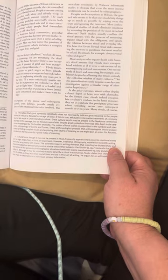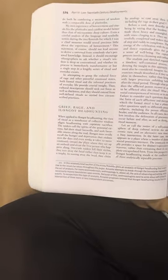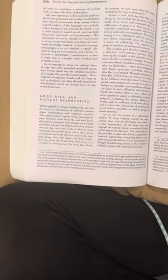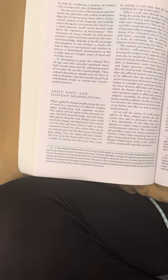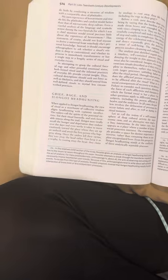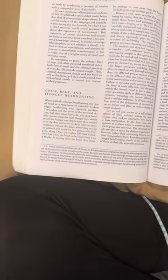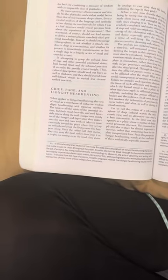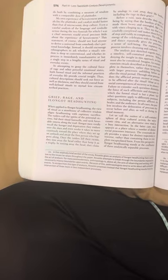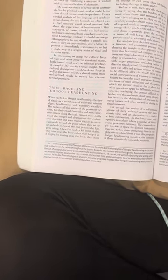Most analysts who equate death with funerary ritual assume that rituals store encapsulated wisdom as if it were a microcosm of its encompassing cultural macrocosm. One recent study of death and mourning, for example, confidently begins by affirming that ritual embodies the collective wisdom of many cultures. Yet this generalization surely requires case-by-case investigation against a broader range of alternative hypotheses. At the polar extremes, rituals either display cultural depth or brim over with platitudes. In the former case, rituals indeed encapsulate a culture's wisdom. In the latter instance, they act as a catalyst that precipitates processes whose unfolding occurs over subsequent months or even years. Many rituals, of course, do both by combining a measure of wisdom with a comparable dose of platitudes. My own experience of bereavement and rituals fits the platitudes and catalyst model better than that of the microcosmic deep culture.